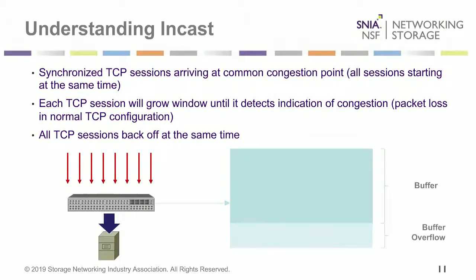This is where things can get tricky. When these large flows come into a switch, they start to fill up the buffer inside of a switch. These buffers are made for handling this, and there's a lot of headroom built in. However, sometimes those buffers fill up and can even overflow. This can lead to something called incast collapse: incast happens when synchronized sessions arrive at a common congestion point at the same time. Each TCP session will grow the window until it detects congestion, which then triggers packet loss. At the same time, all TCP sessions will back off — and that is what we call incast collapse.